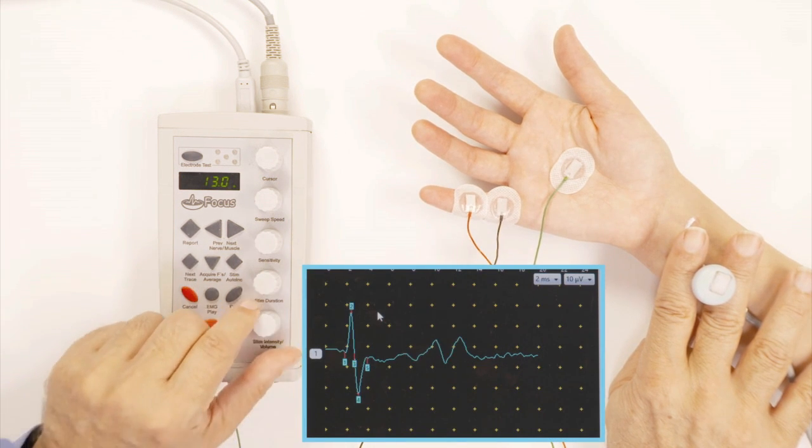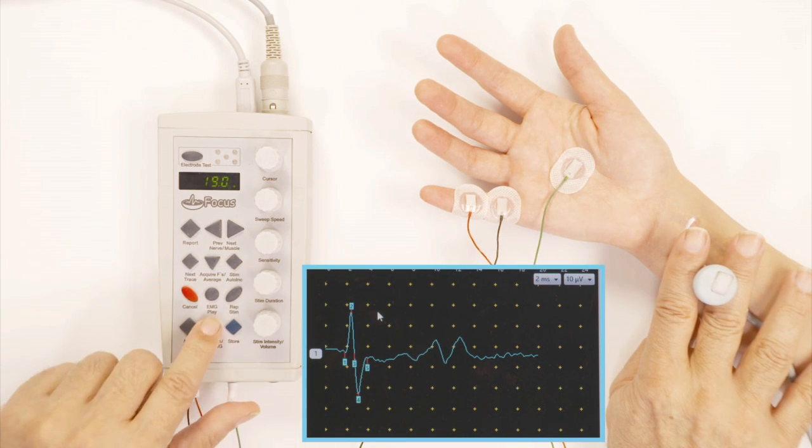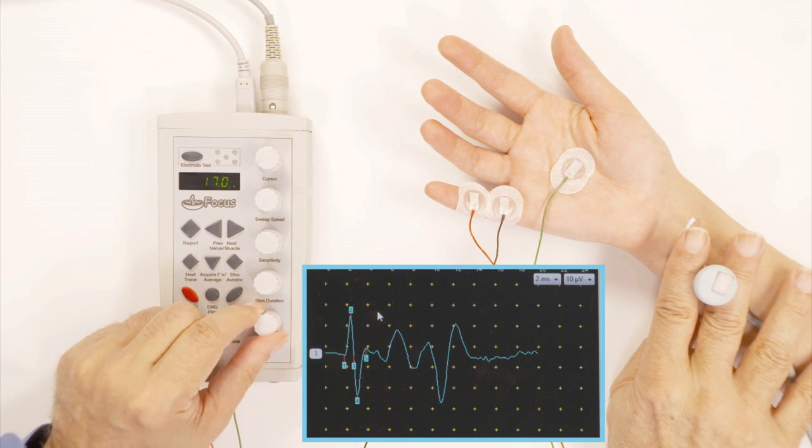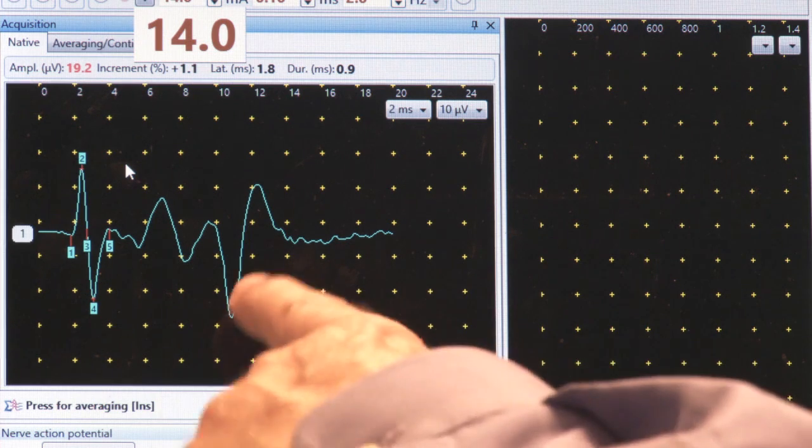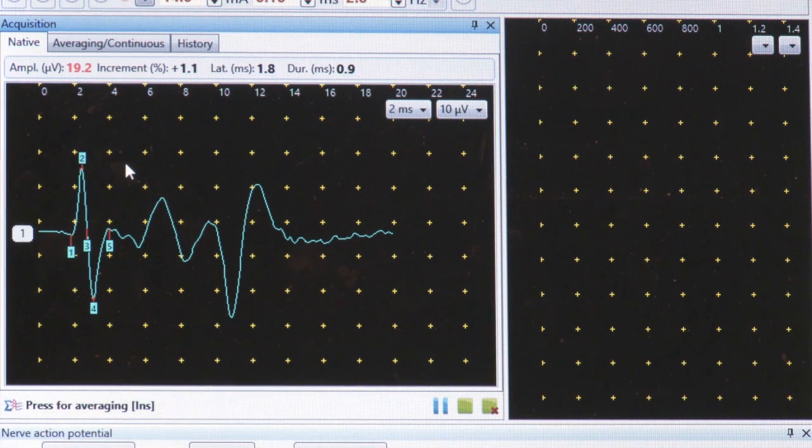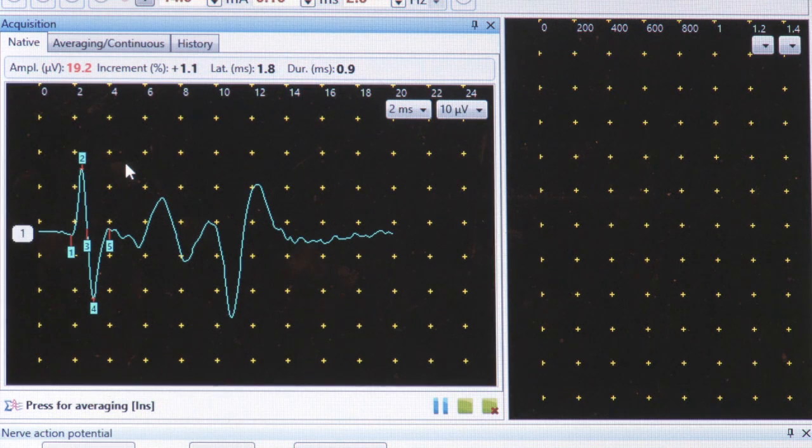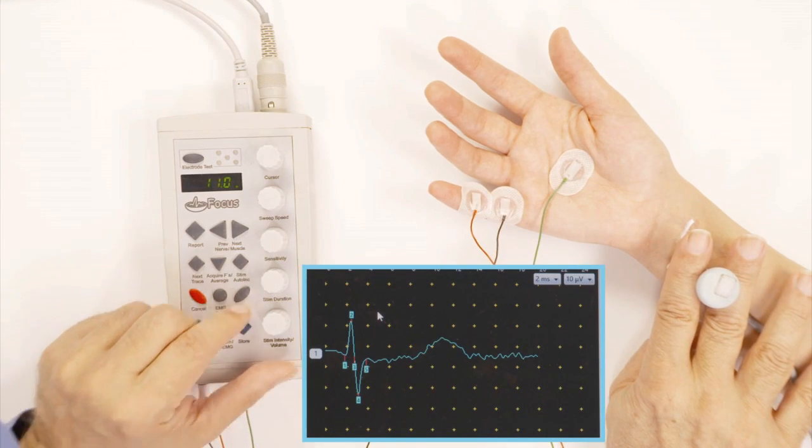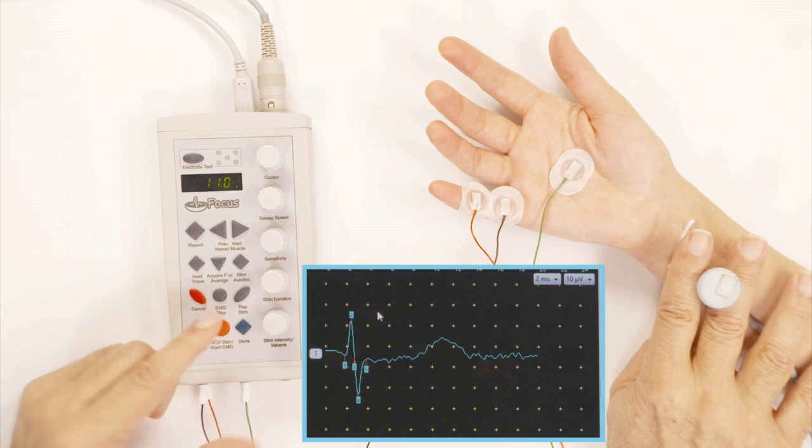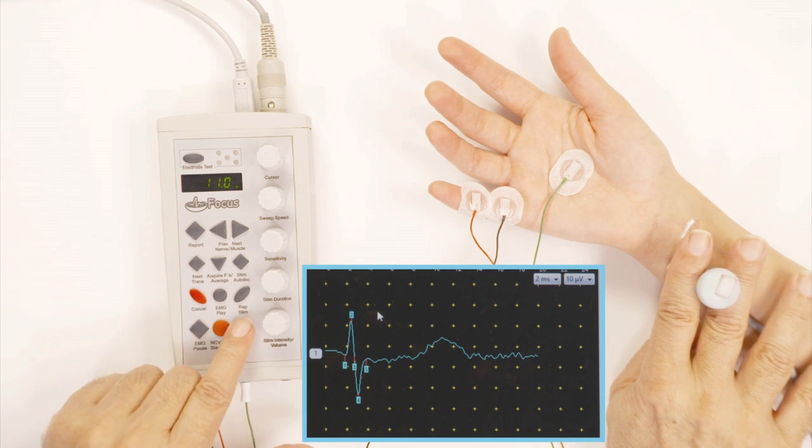By the way, if you put too much electricity, you're going to start seeing all this stuff here next to it—that's the movement artifact. That means that the finger is moving, and it's not actually the nerve itself. So I'm going to decrease the intensity a little bit. Now I'm happy with that, so I'm going to press the green button, which is to store.